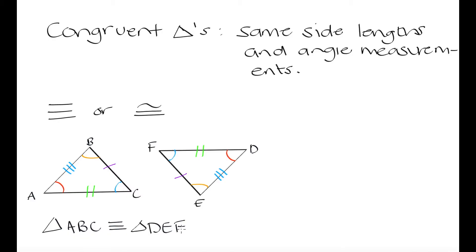So that order is very important. If we wrote this triangle as triangle CBA, we would have to write down that it's congruent to triangle FED. We have to make sure that the vertices that are equal in our corresponding triangles are in the same position. It turns out that we have a few rules we can use to determine whether two triangles are congruent without having to measure out each of the angles and side lengths.